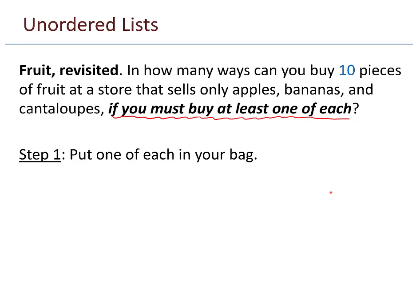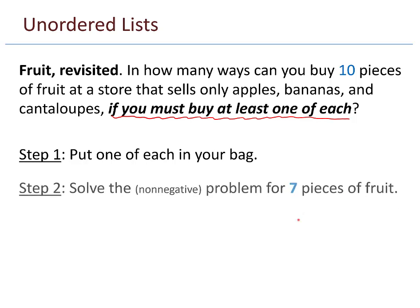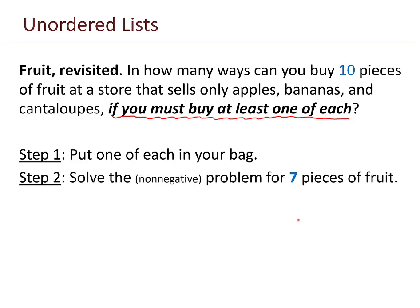All right. So there I am at the store with a bag. I throw in one apple, one banana, one cantaloupe. There we go. I have satisfied at least one of each. Now I only need seven more pieces of fruit. And so I solve the non-negative problem for seven pieces of fruit, where now for the seven remaining, I am allowed to choose zero of some type. That really is just the answer to our problem there. It becomes seven plus two, choose two, which is nine choose two, or 36.